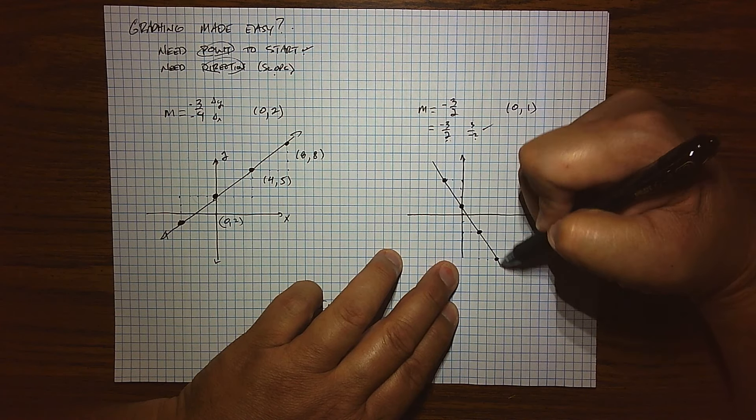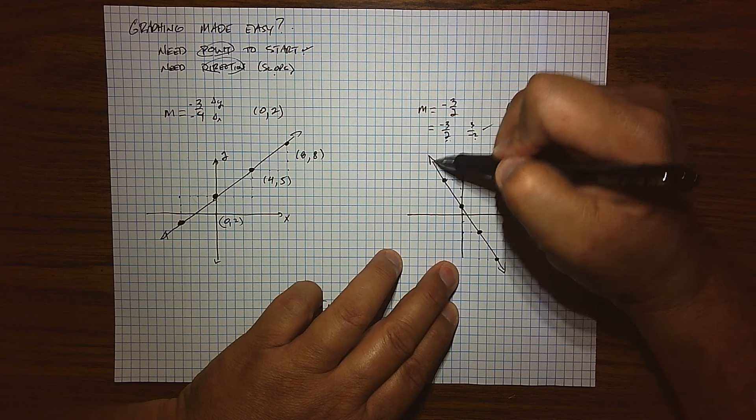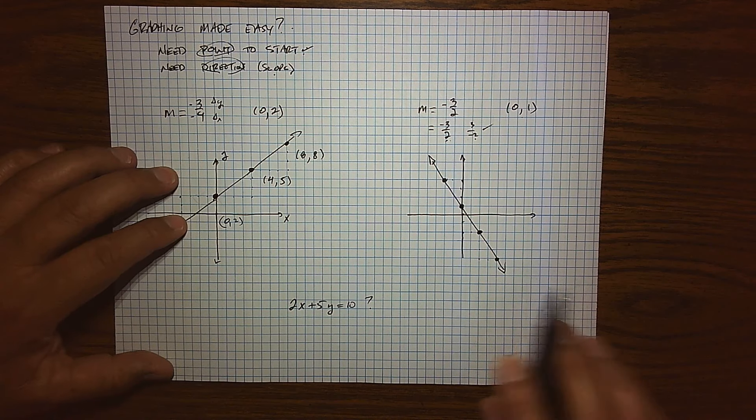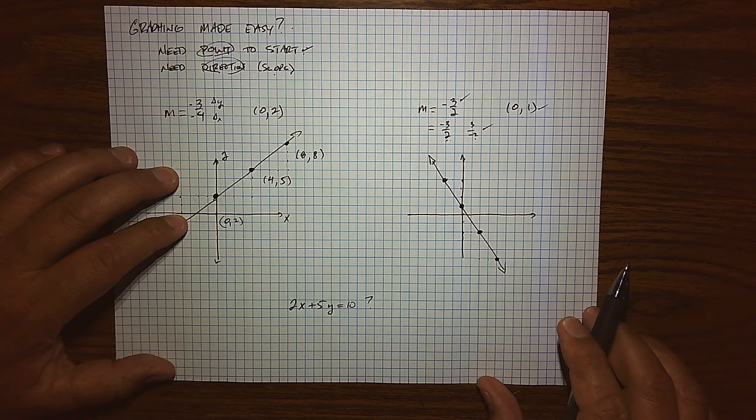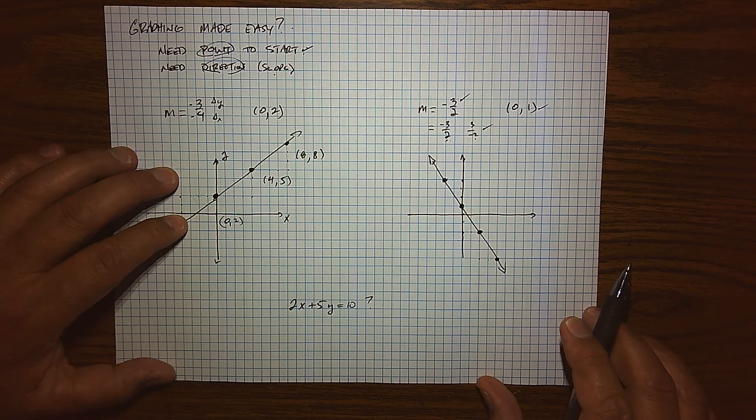And so there's basically the picture of the line that goes through (0, 1) with a direction or slope of negative 3 halves. So that's how graphing can be easy.